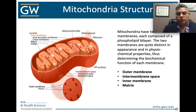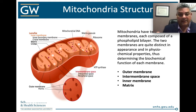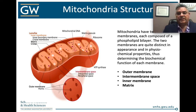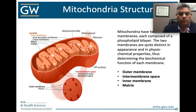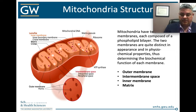Mitochondria are responsible for fuel for all cells, organs, and tissues throughout the body. They have two important membranes, quite different from each other, each composed of a phospholipid bilayer. They're distinct in terms of their chemical composition, which to some degree determines their biological activity. We have the outer membrane, the intermembrane space, the inner membrane, and then the matrix itself, which includes the mitochondrial DNA. That's where ATP is produced.